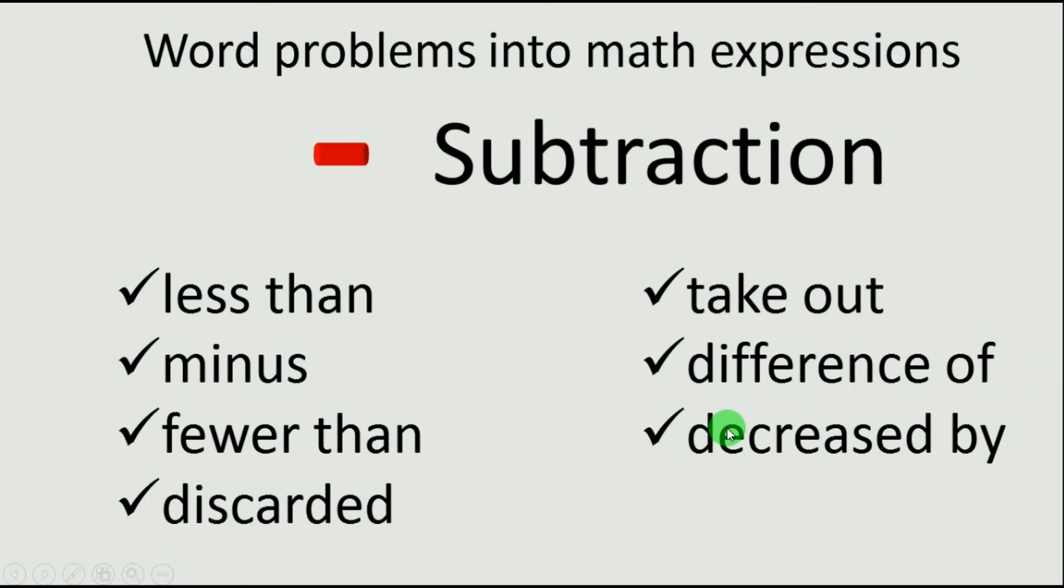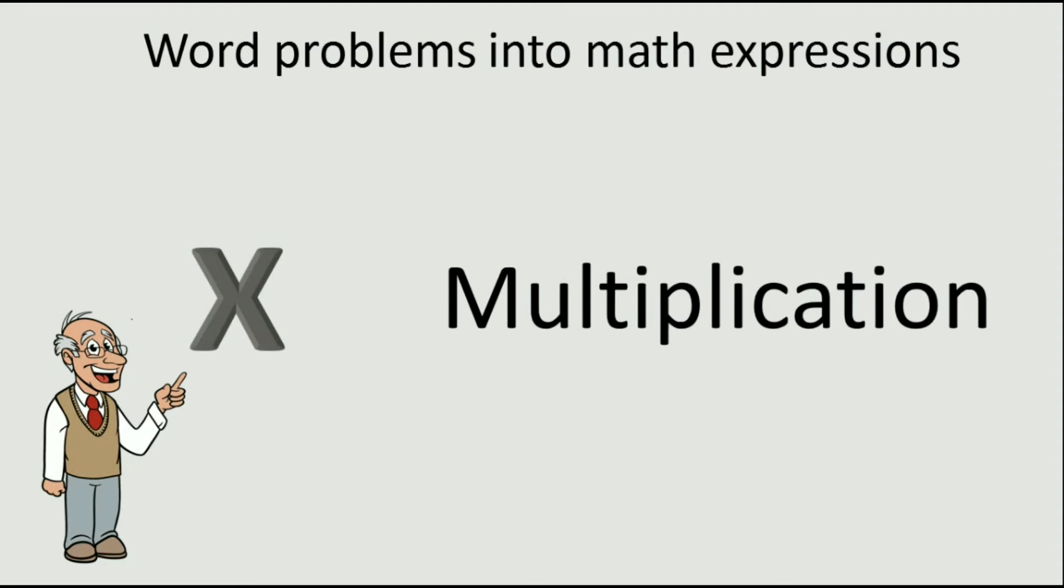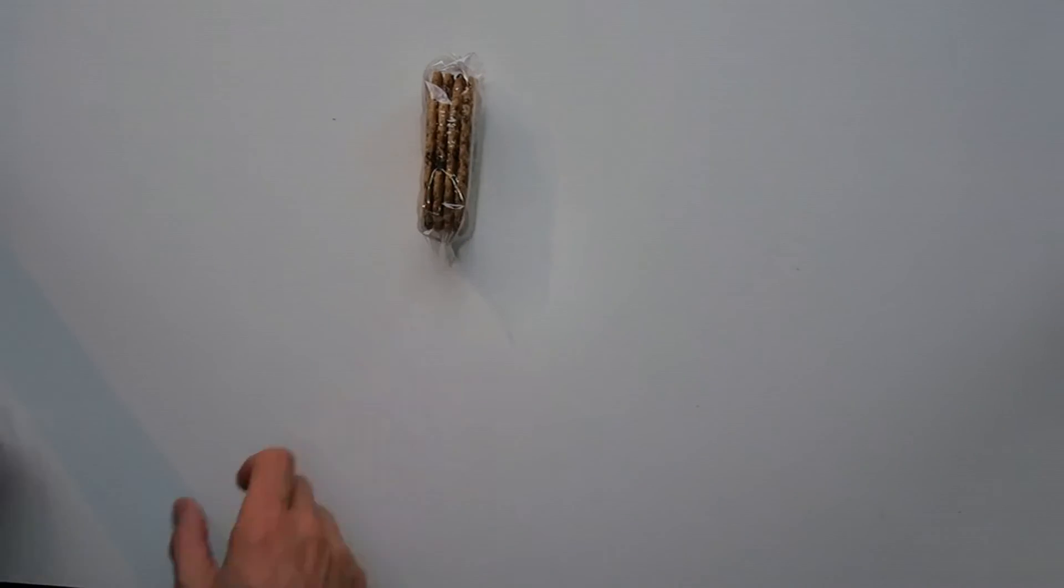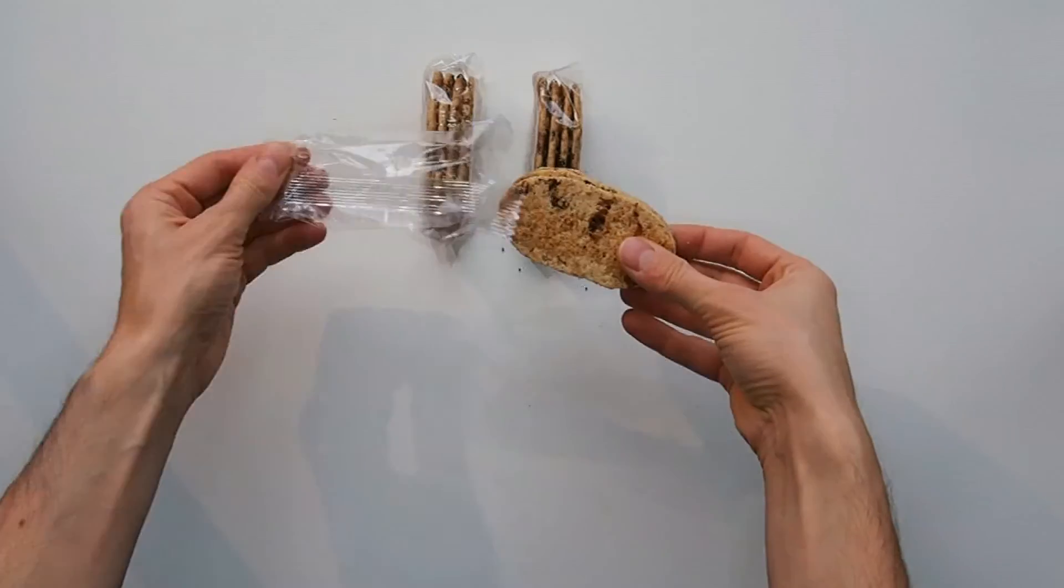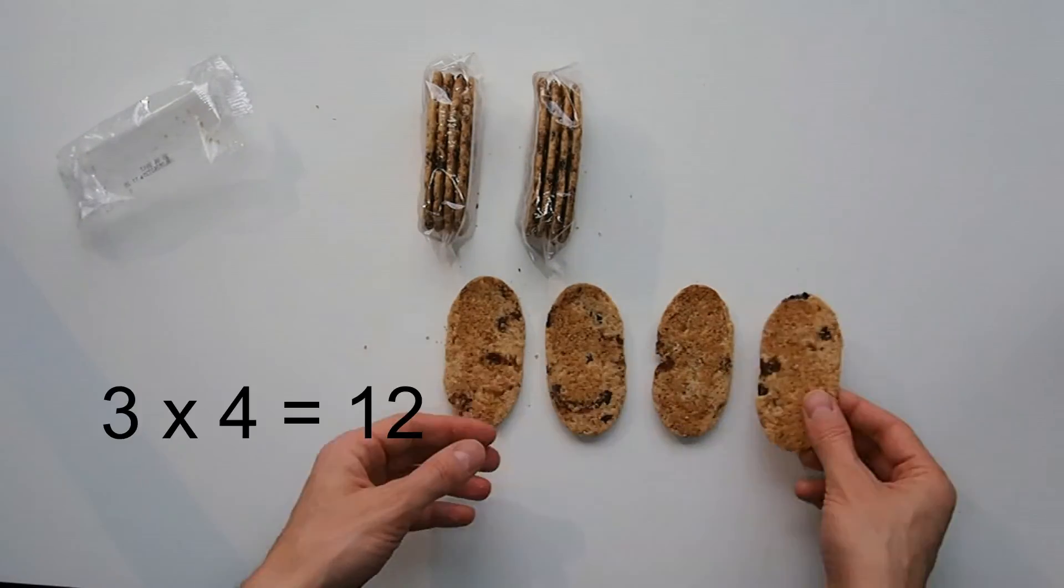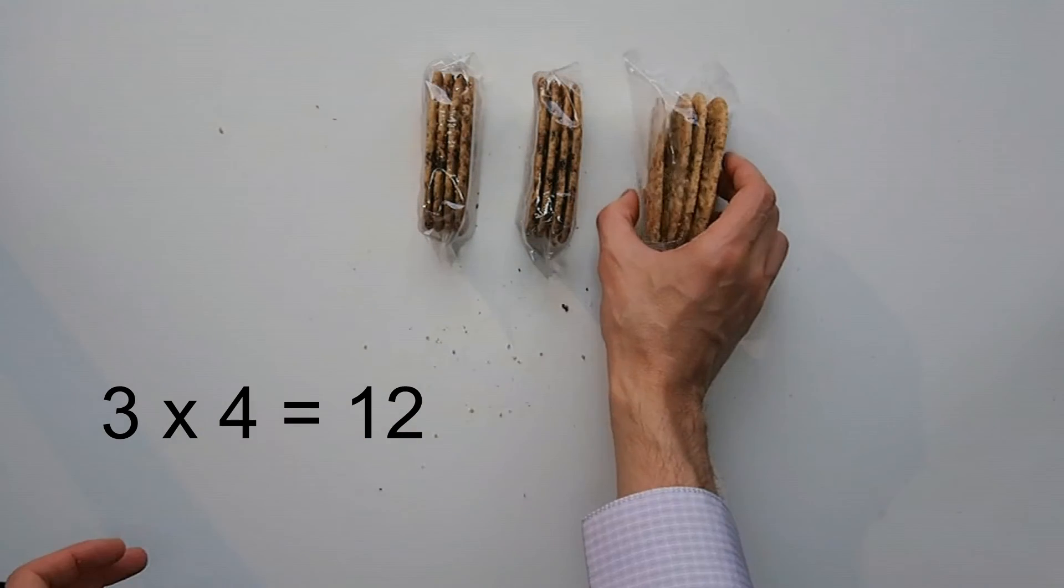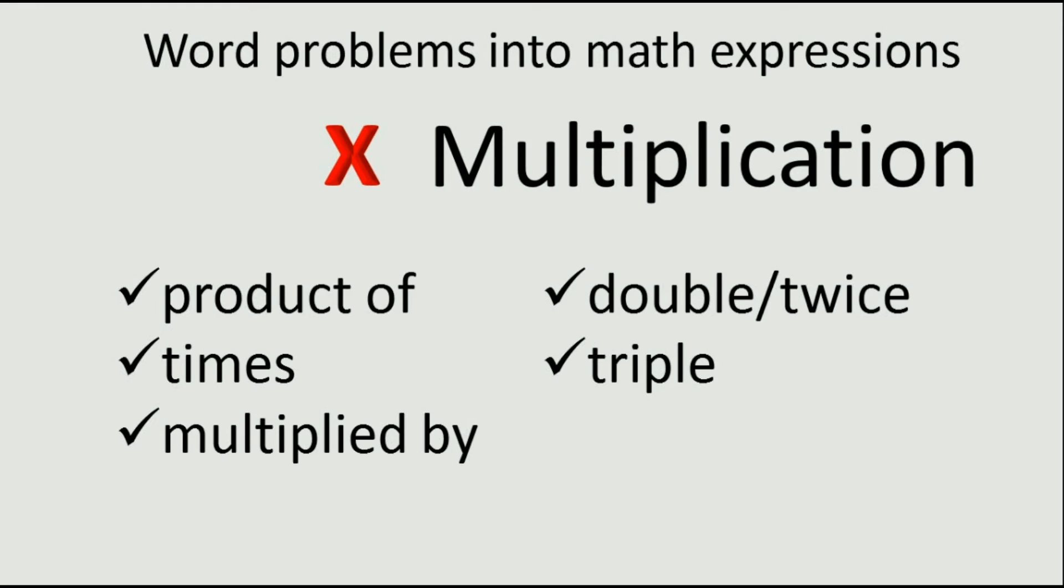Let's see multiplication now. I have one pack of biscuits, two, three packs of biscuits. How many biscuits are in one pack? One, two, three, four. How many biscuits I have in total? Three times four.